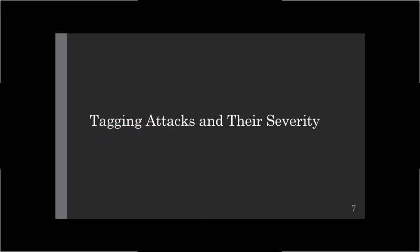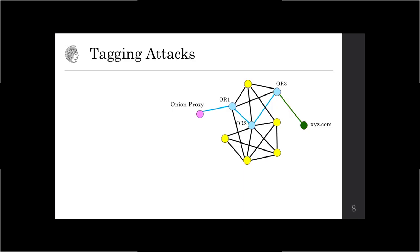Let me now describe an attack that can be used to break anonymity in Tor. Assume we have an adversary who controls a subset of the onion routers in the network, marked in red. In this case, the adversary controls the first and last onion routers in the circuit — R1 and R3 — and this allows him to mount the following attack.